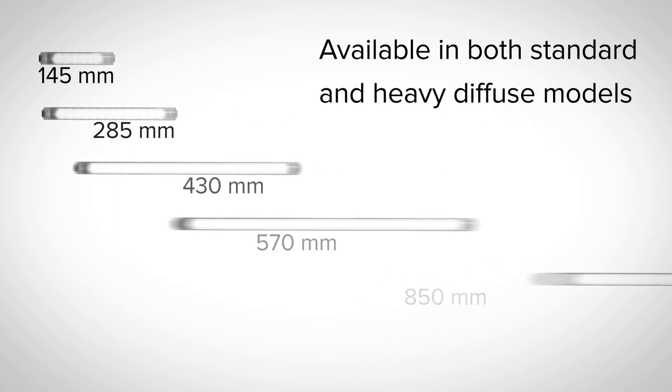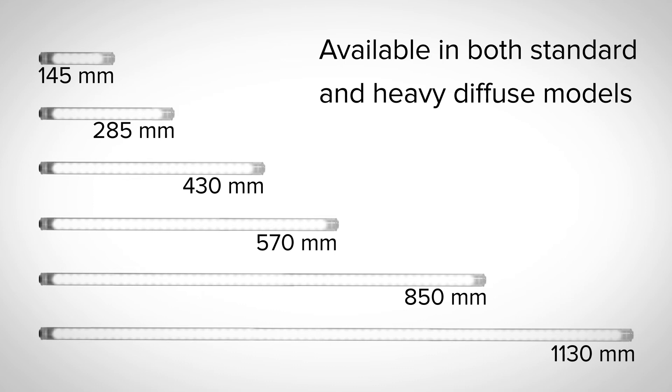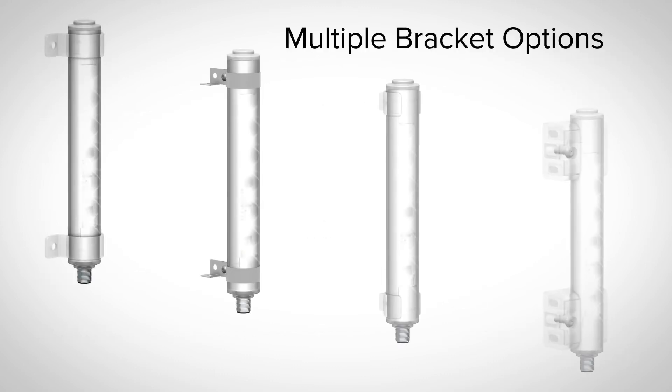WLS-27 Pro is available in six lengths from 145 to 1130 millimeters with both standard and heavy diffuse window options. A variety of brackets are also available for quick installation.